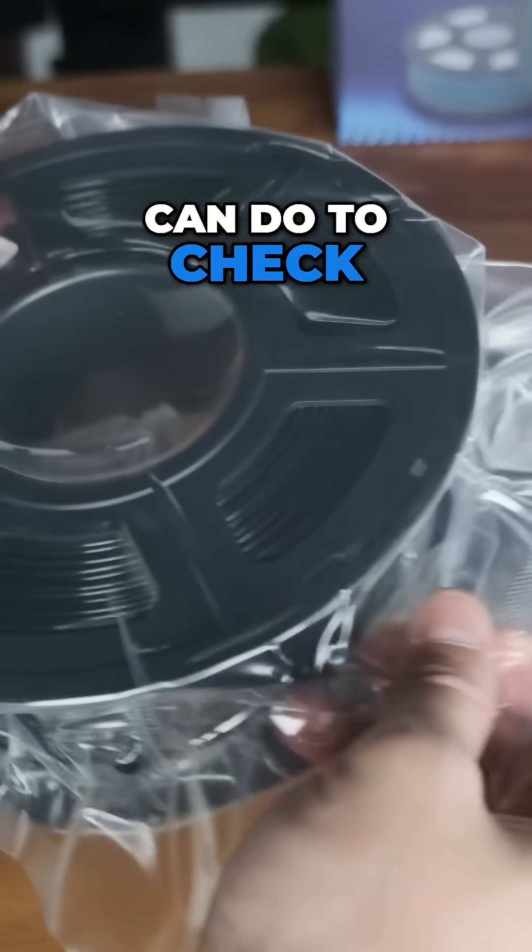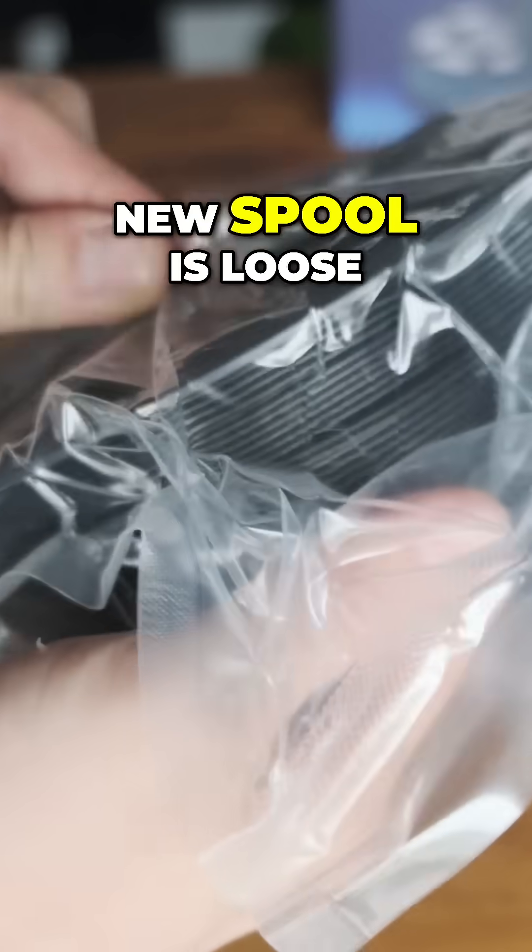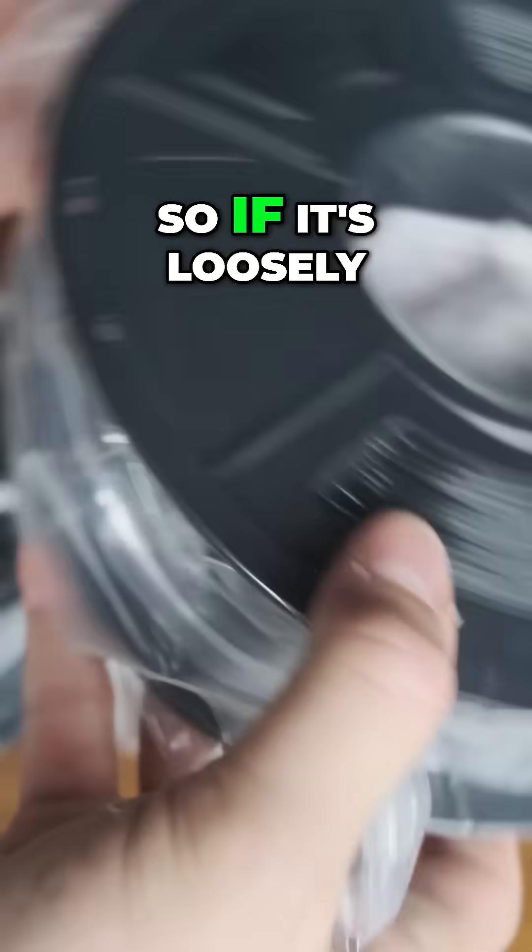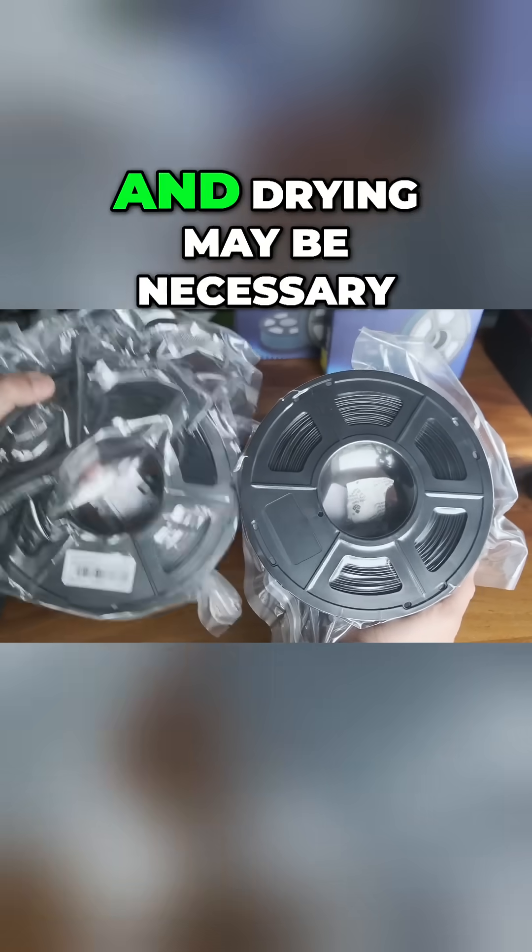Another thing you can do to check if your filament is wet, before you even start printing with it, is to see if the packaging of the new spool is loose or compromised, as most of them are vacuum sealed. So if it's loosely fit around the filament, then it's likely that moisture has gotten in and drying may be necessary.